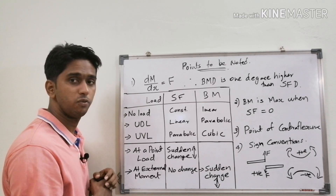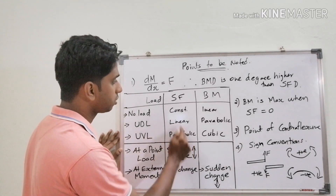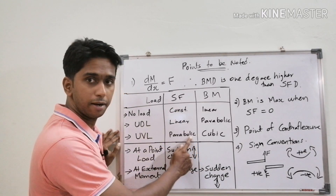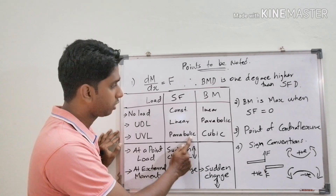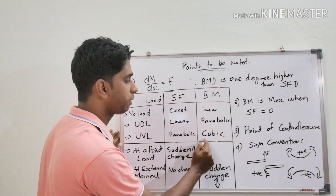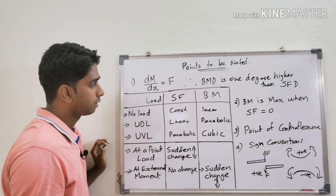And if we have a uniformly varying load (UVL), the variation in shear force diagram will be parabolic, and in the case of bending moment diagram, the variation will be cubic.